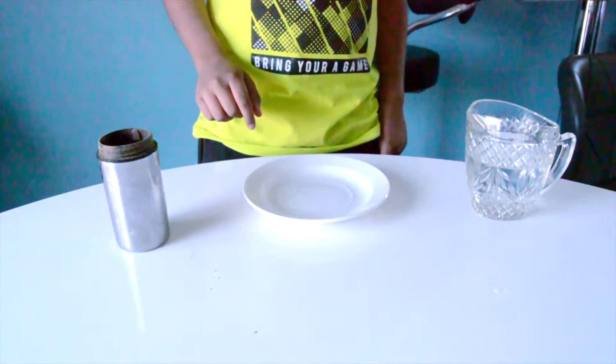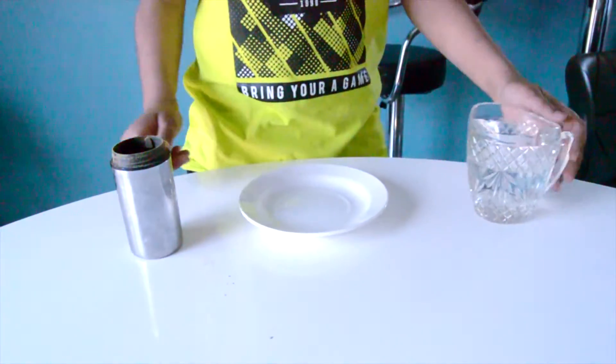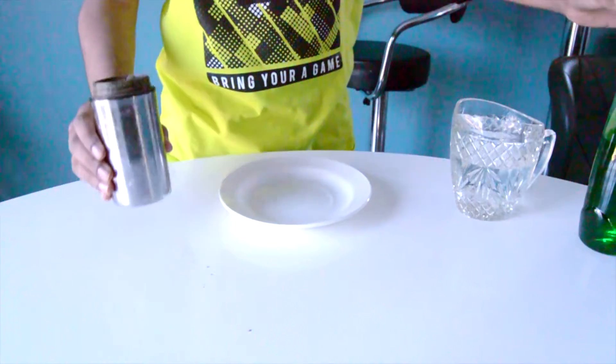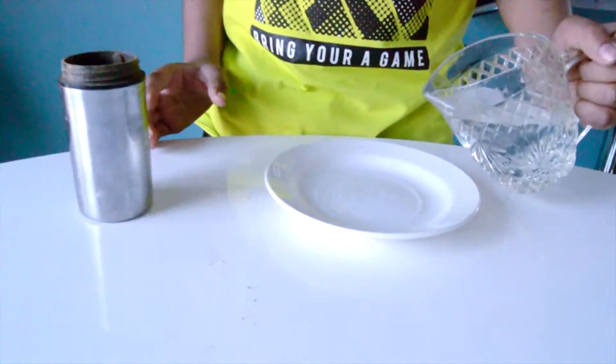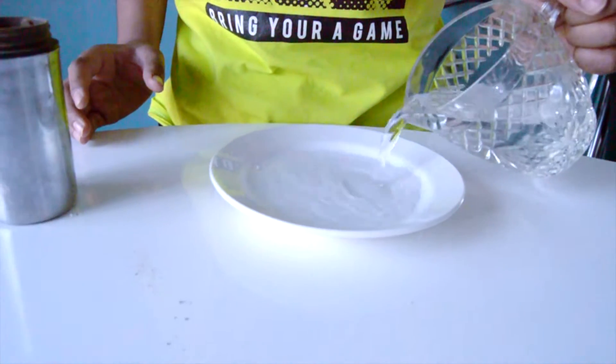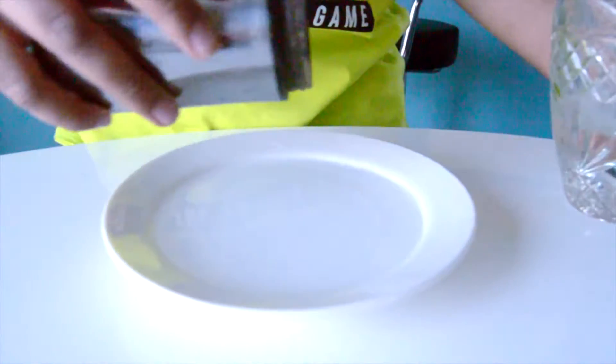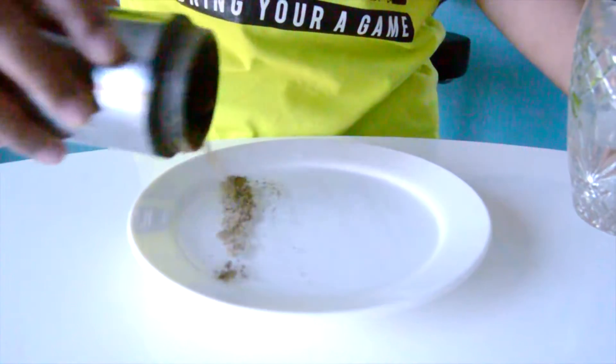So what you're going to need is a plate, water, some soap, and obviously pepper. First we're going to take some of your water and just throw it in your plate. Take some pepper and just sprinkle a little bit on there.